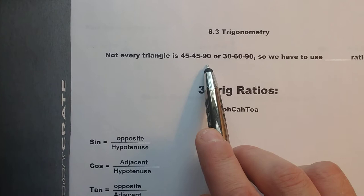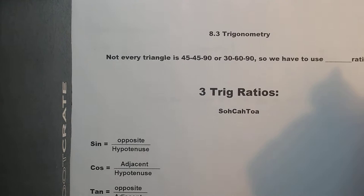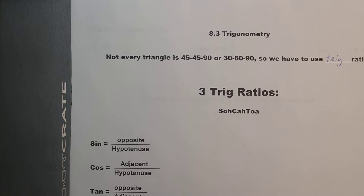I just want to review section 8.3 — this is the trig. Not every triangle is a 45-45-90, or a 30-60-90, so remember those special triangles we were looking at. We have to use these things called trig ratios, and that's where the whole idea of trigonometry comes from.